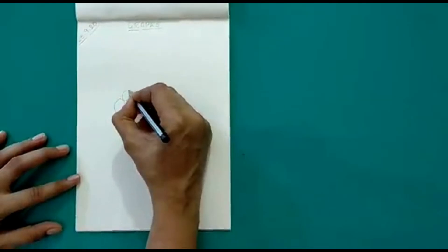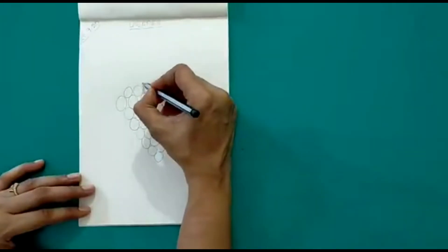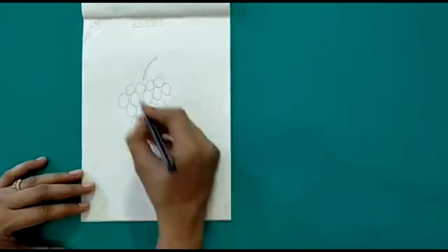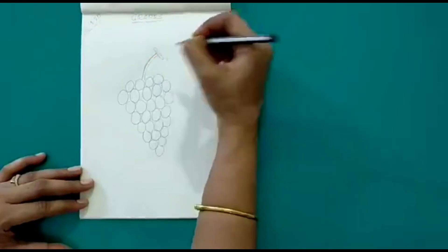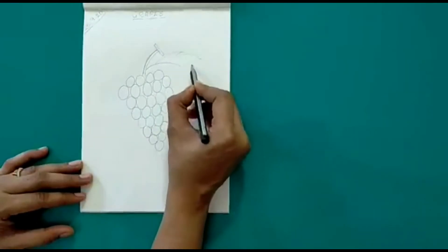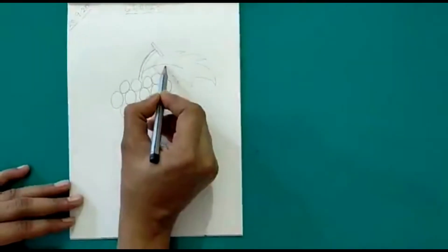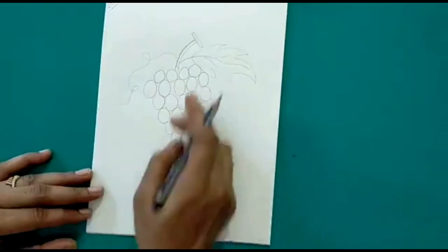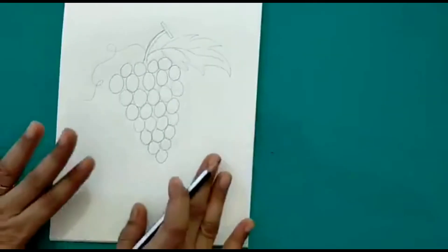Now what you can do is, you can draw a few more ovals here. And then we can give a stem. Now the leaf. You can make a curve, a small curve over here. So this is how you need to draw grapes.